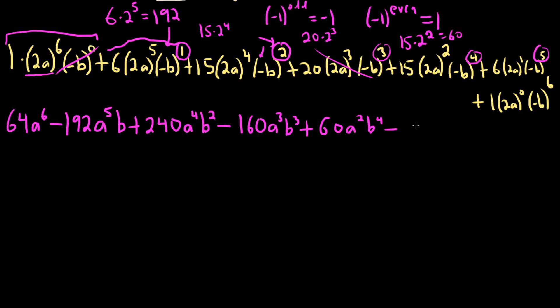The next one is 5. So it's odd. So it's minus. 6 times 2 is 12. A. B to the 5th. The last one is 6. It's even. So it's plus. So plus. B to the 6.